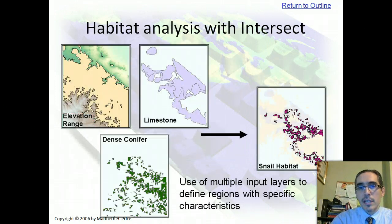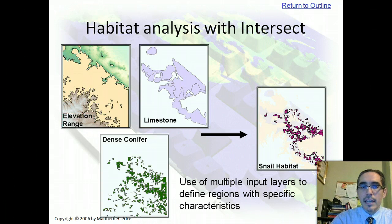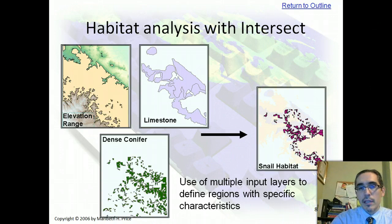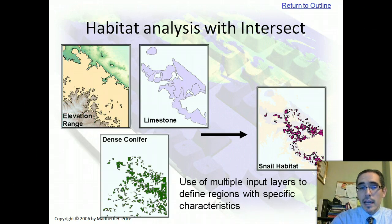Another common use of GIS in an analytical context is habitat analysis or a type of site suitability. Say for example that we were looking to identify the optimum habitat for a particular snail that's endangered. Doing a manual inventory or census of the snail — actually going out there and trying to count snails — might be too difficult, too expensive, and just not practical, particularly in rugged country. But instead we could talk to an ecologist or biologist who knows what the snail needs to survive and can predict where it's likely to occur. The ecologist tells us the snail only lives in certain elevation ranges — say above 1,100 feet or so.